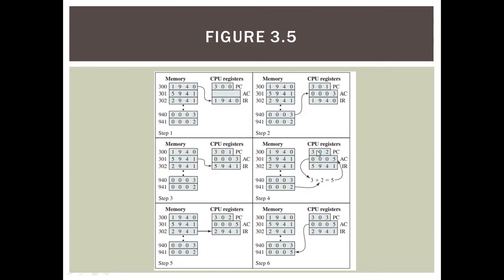After that, the CPU register PC is 302, so we move to step 5, looking for address 302. The value at address 302 is 2941, so IR becomes 2941. Because the first number is 2, it means store. So we will store to address 941 — the address 941 currently contains 0002 — then we move to step 6.